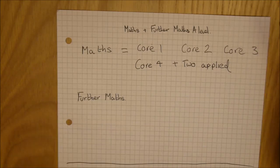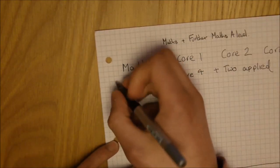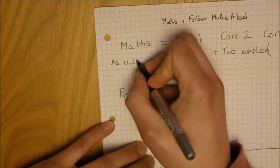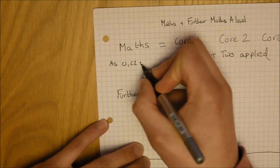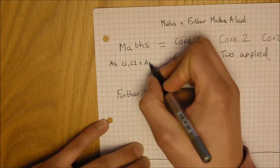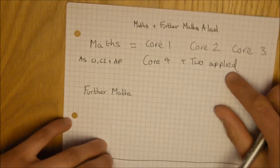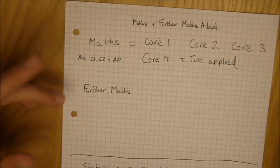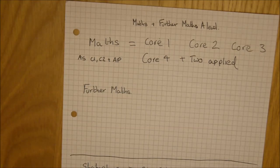Now, the way in which this is broken down traditionally is that for your AS, just quickly do a quick note here, AS will be C1, C2, core 1, core 2, plus applied paper. Now what this normally means is that it's core 1, core 2, plus M1, S1, or D1, because they are the applied units.